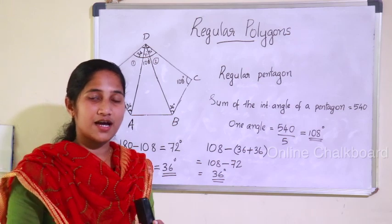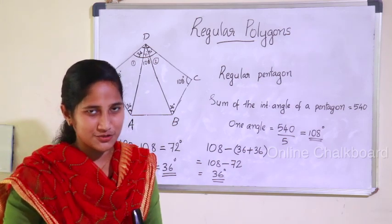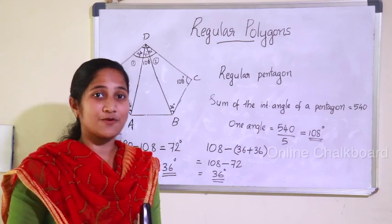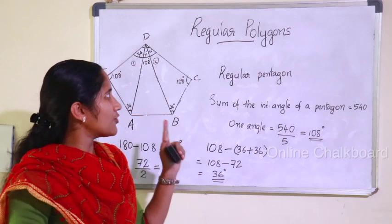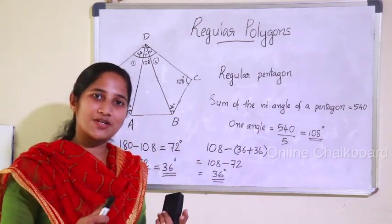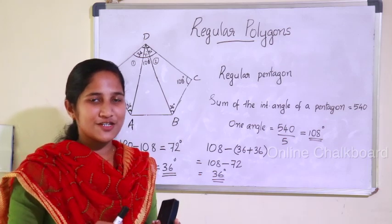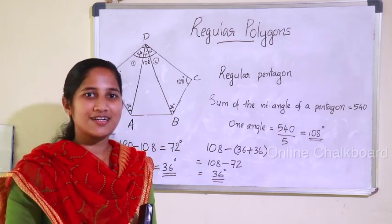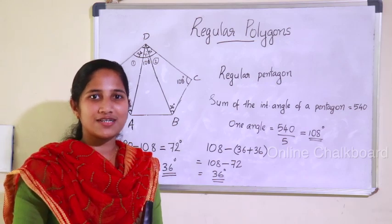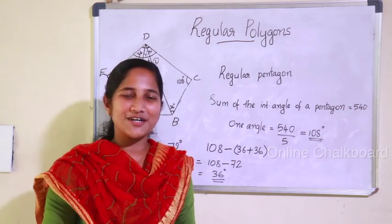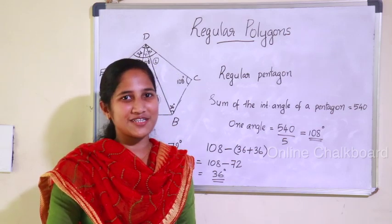The sum of the exterior angles of any polygon is 360 degrees. We have covered examples of regular polygons. Please like this video, share it with your friends, comment, subscribe, and click the bell icon. In the next video, we will continue. Bye.